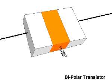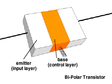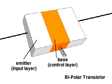In bipolar transistors, the input layer is called the emitter, the control layer the base, and the output layer the collector.